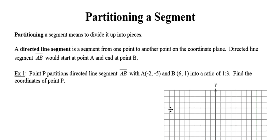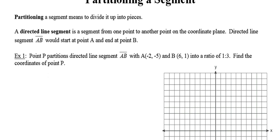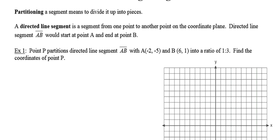I want to talk a little bit about what a directed line segment is first. A directed line segment is very simply a segment from one point leading to another on the coordinate plane. So directed line segment AB would have a starting point at point A and an ending point at point B. Partitioning means to divide it up into pieces in a given ratio.